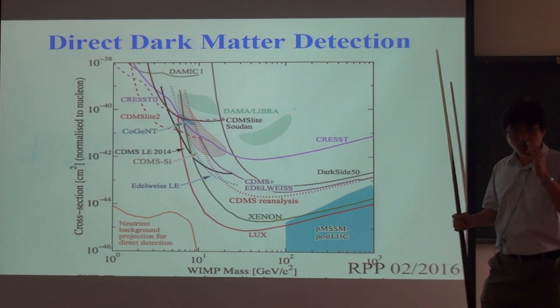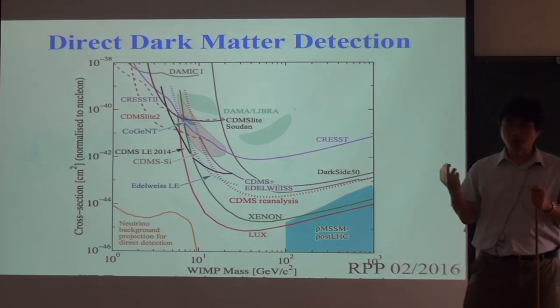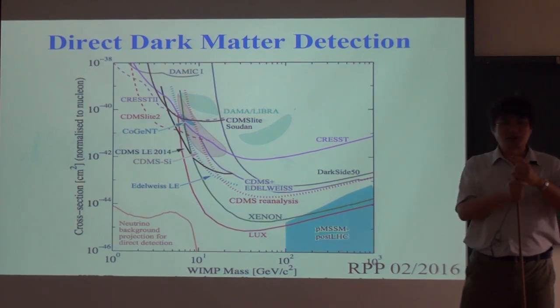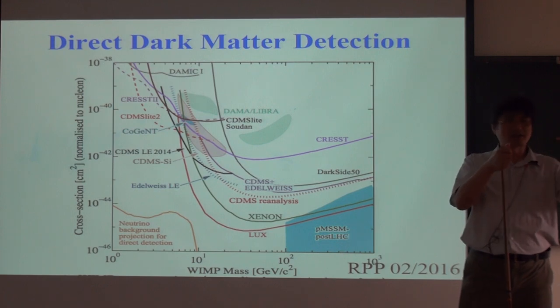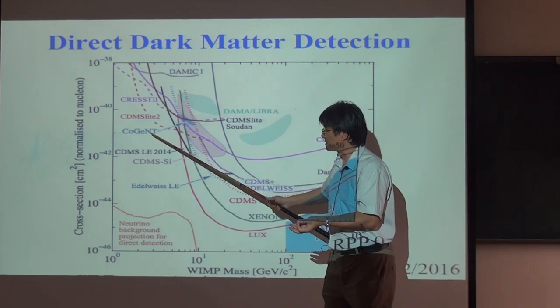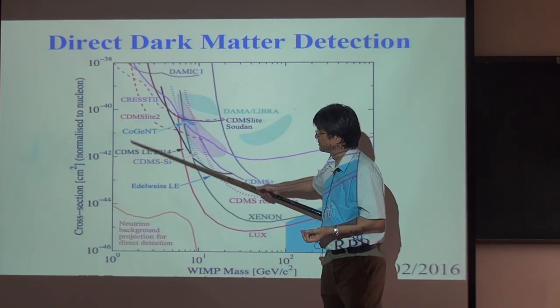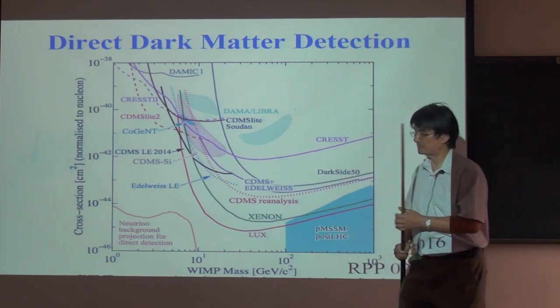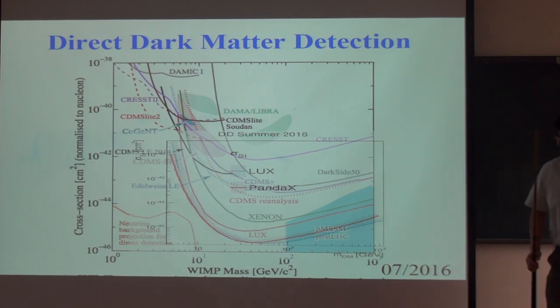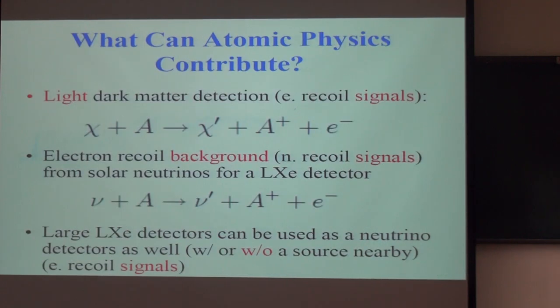So the most efficient energy transfer is when the dark matter mass is around equal to the mass of the nucleus. So that's why the best constraint is here. And what we are interested in is actually the light dark matter candidate for the mass. And here in this region, that's around one GeV. So it's wide open.